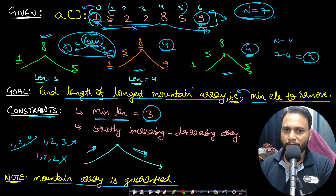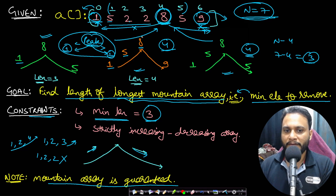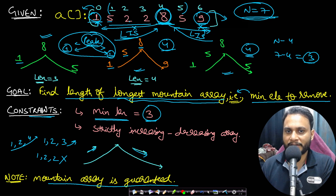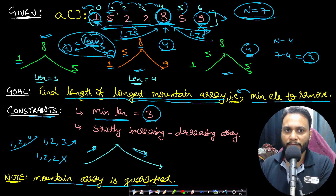If we look closely at what we are trying to do, we are forming the longest mountain array. If I pick a peak point, say 8, I will find the increasing subsequence from the left side ending at 8, and the increasing subsequence from right to left ending at 8. To maximize the mountain array size, these subsequences must be the longest increasing subsequences. We try all elements as the peak — from the second to the second-last index.